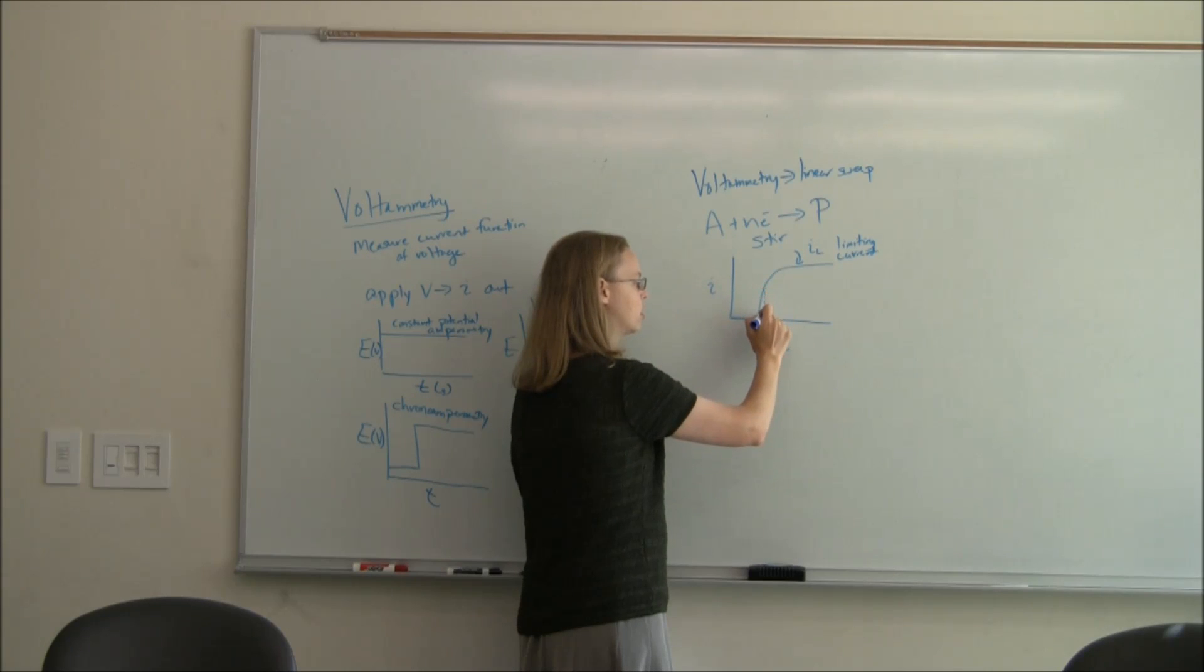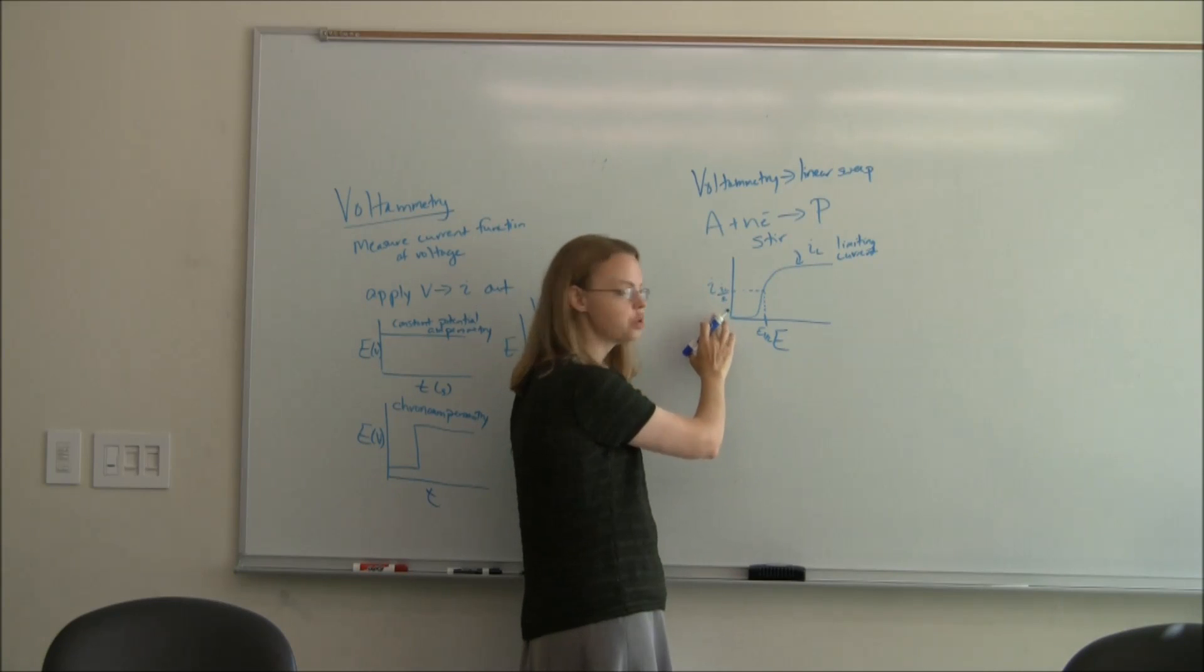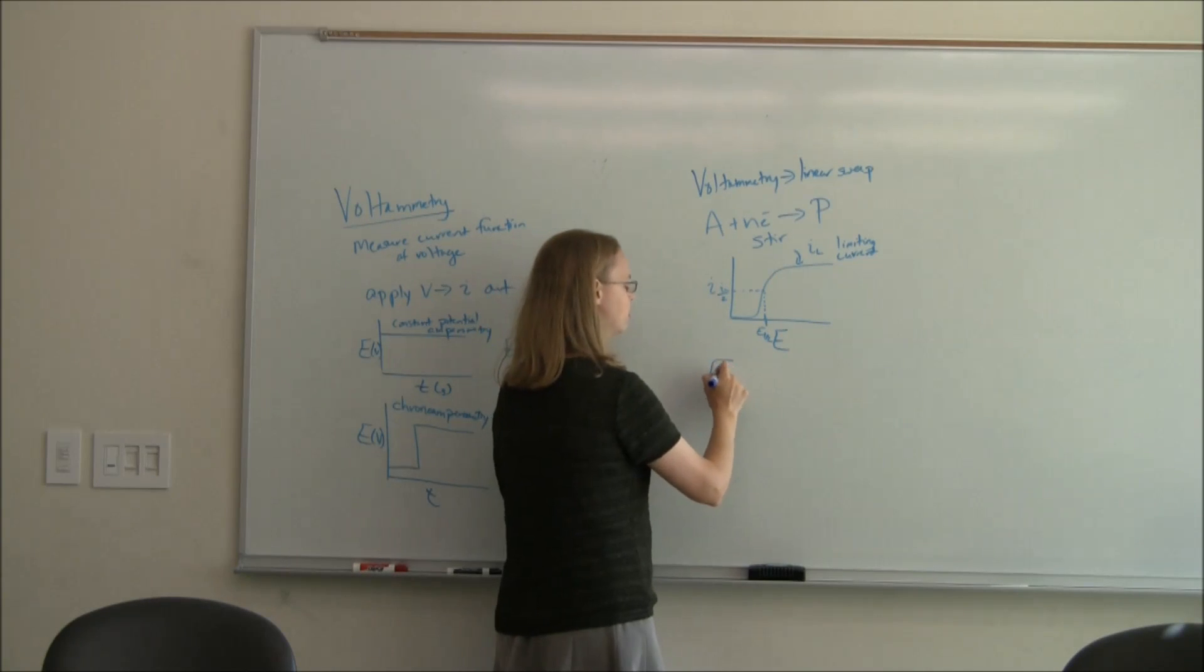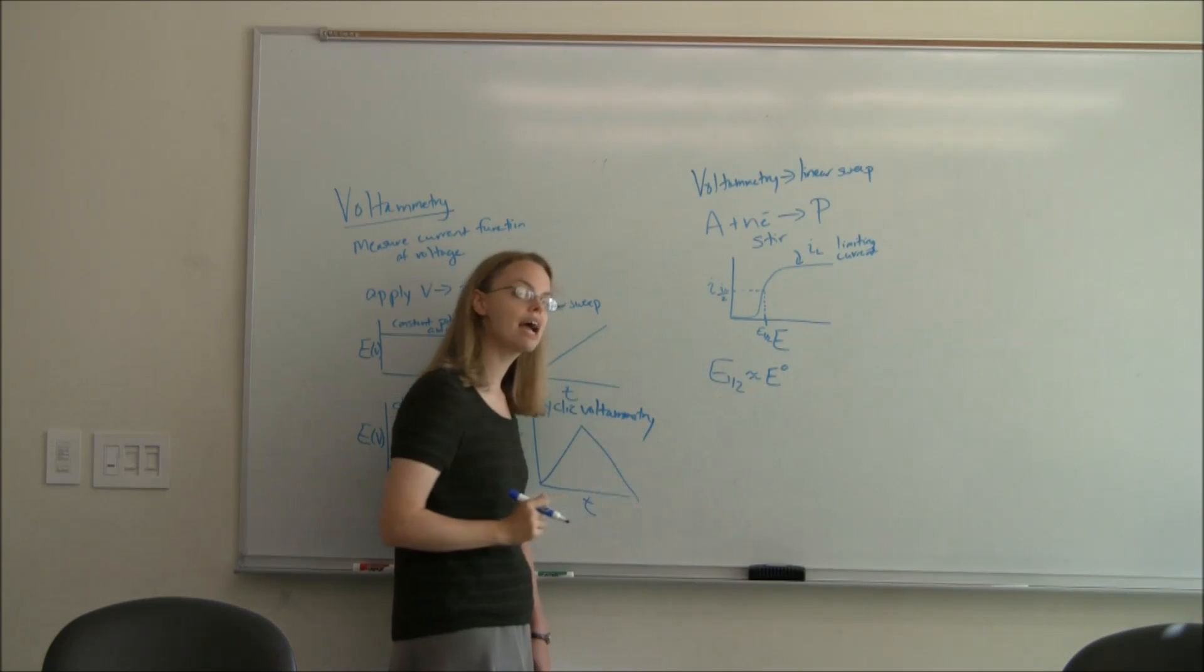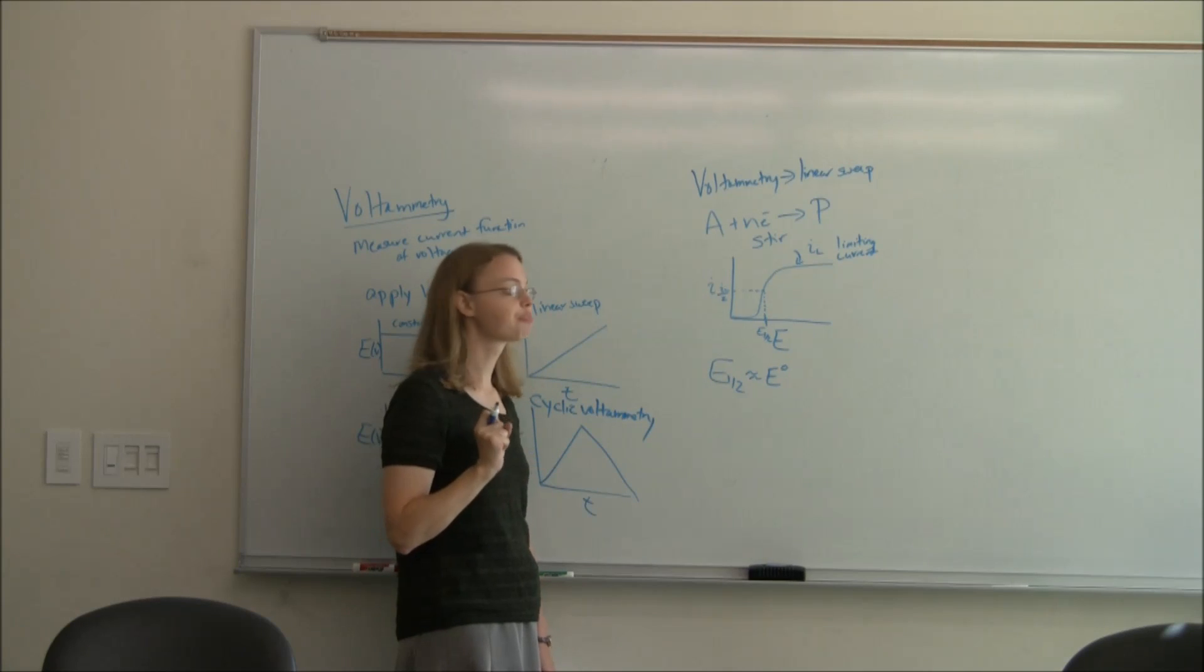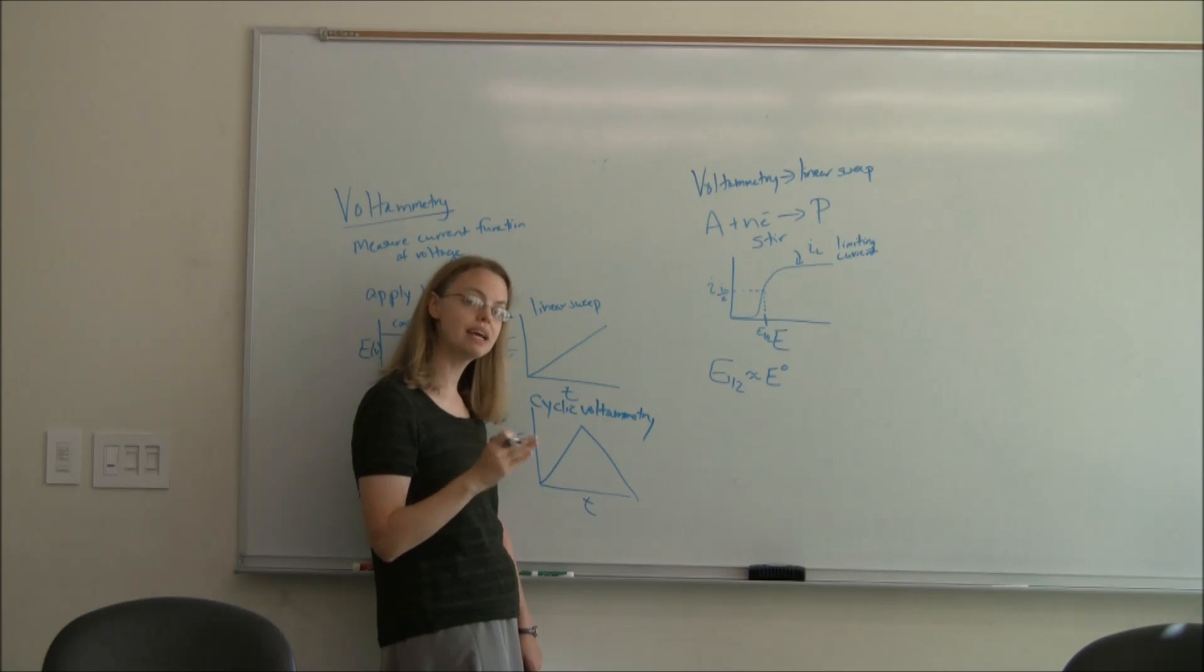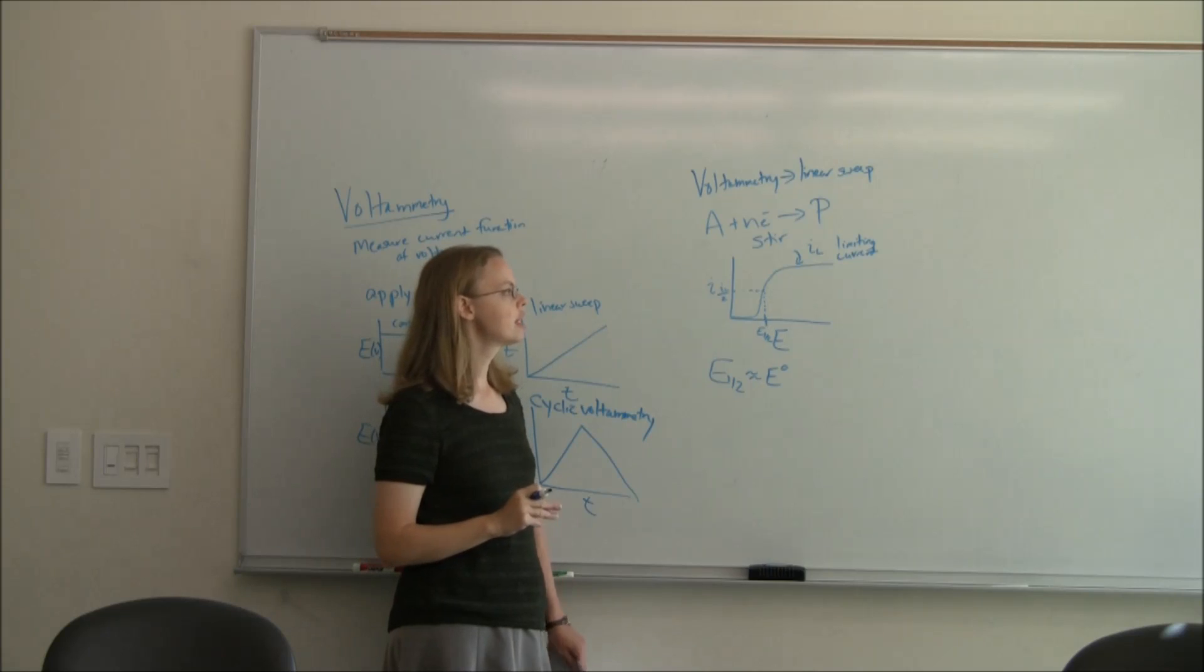And then at a certain potential, we go off, we get a steady state current that we call the limiting current. What parameters can we get out of here? We can look at what is the current when I'm at half of the height. So the limiting current is the maximum I can get. I sub L over 2 would be equivalent to E one half. And E one half, it turns out, is approximately equal to that standard state potential that we talked about before. So that tells you something about the potential that the reaction can happen at.